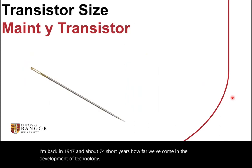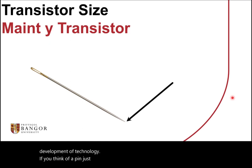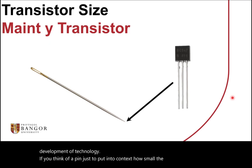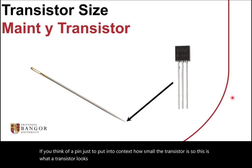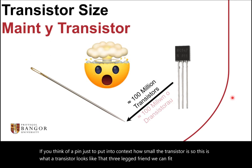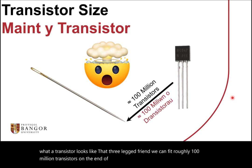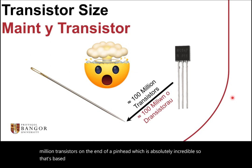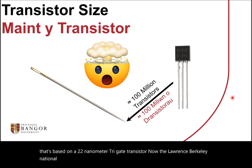Just to put into context how small the transistor is: this is what a transistor looks like — a three-legged component — and we can fit roughly 100 million transistors on the end of a pinhead, which is absolutely incredible. That's based on a 22-nanometre tri-gate transistor. The Lawrence Berkeley National Laboratories have actually built a functional one-nanometre transistor, which is even more mind-blowing.